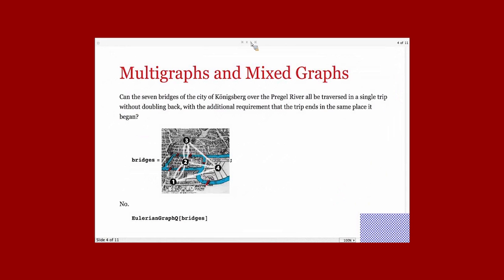This is a standard problem, the Königsberg bridge problem from Euler. You can solve it quite easily by just modeling the network, which is the different bridges in the city of Königsberg, and use EulerianGraphQ to answer the problem or the original question from Euler about it.